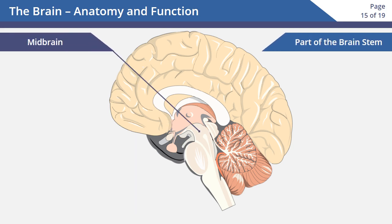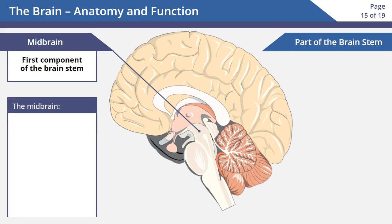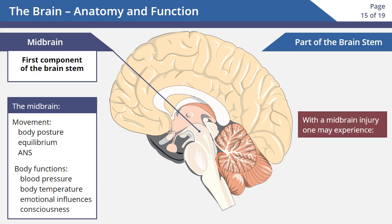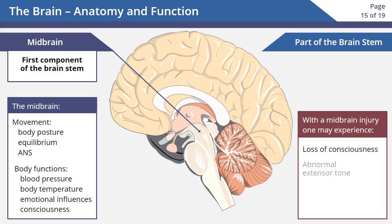Let's wrap up by looking at the brain stem. The first component is the midbrain. It has an important role in movement, including body posture, equilibrium, autonomic nervous system, and body functions including blood pressure, body temperature, emotional influences, and consciousness. Someone with problems in this area may experience a variable loss of consciousness, abnormal extensor tone, hyperventilation, and cranial nerve deficits.